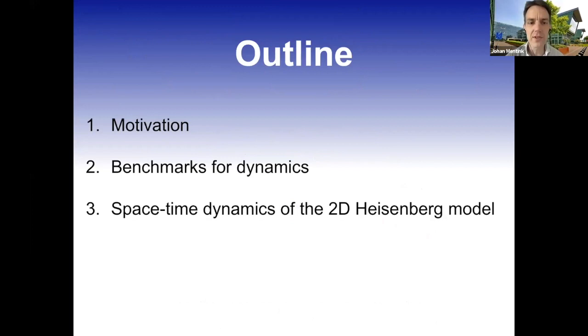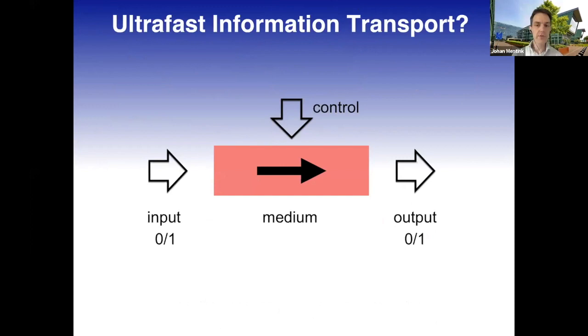After that I will show some benchmarks for dynamics and also some results where we found new results that we could only obtain with these neural quantum states. The motivation is quite simple - we want to understand how we can transport information on very fast timescales. Here you see an abstract image showing input on the left, output on the right, and a medium in which information propagates.